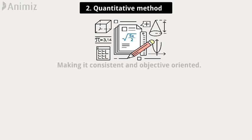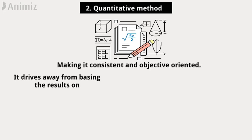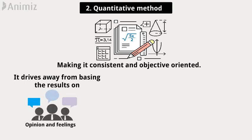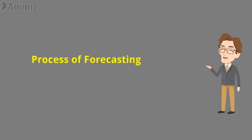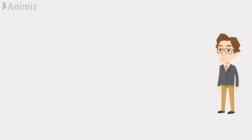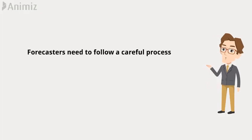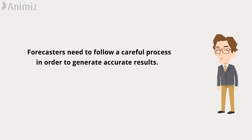The second method is the quantitative method. The quantitative method of forecasting is a mathematical process, making it consistent and objective-oriented. It drives away from basing the results on opinion and feelings, instead utilizing large amounts of data and figures that are interpreted.